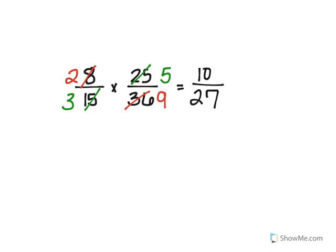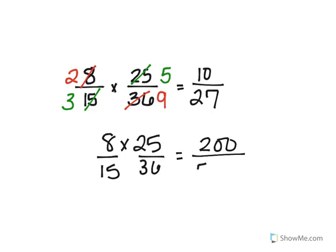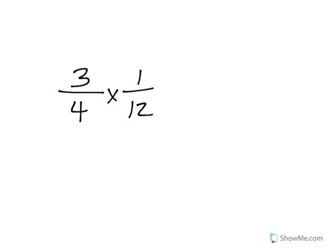Just to show you — if I had done 8 times 25, I would have gotten 200, and 15 times 36 would have been 540. Then I'd need to simplify: they both end in zero, so divide by 10 to get 20 over 54, and since both are even, divide by 2 to get 10 over 27. That's a lot more work than simplifying beforehand.